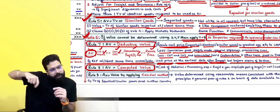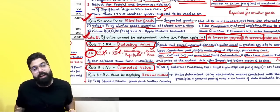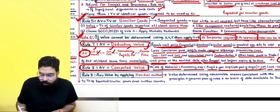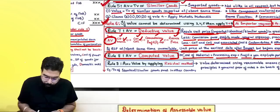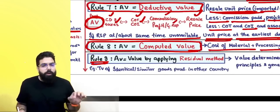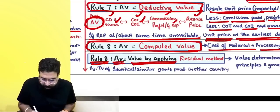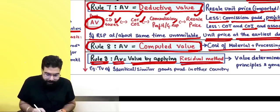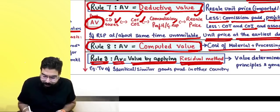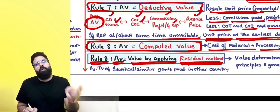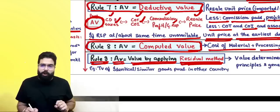Under Rule 8 computed value: take cost of material, processing costs, profit, general expenses up to the port of origin, plus cost of transportation and insurance, applying Rule 10(2), to arrive at the value at the Indian port. Rule 9 says the acceptable value equals the value determined by the residual method. If you cannot apply Rules 3 through 8, you determine the value using reasonable means consistent with the principles and general provisions of the rules, based on data available in India.